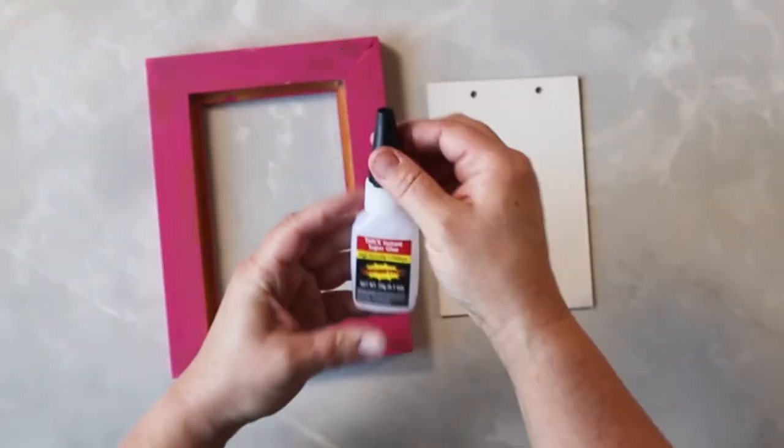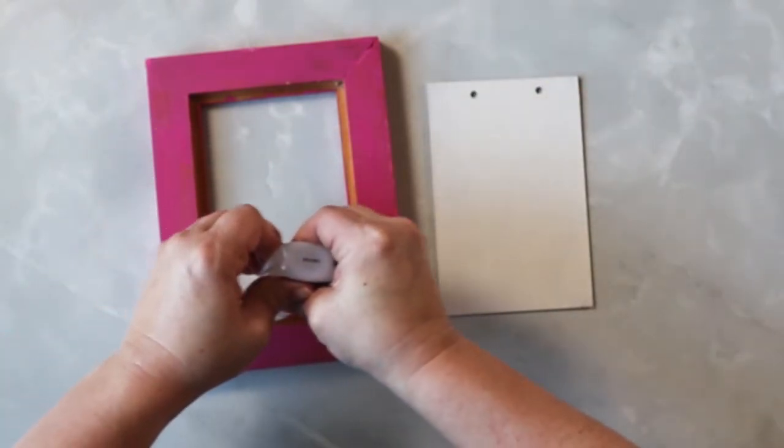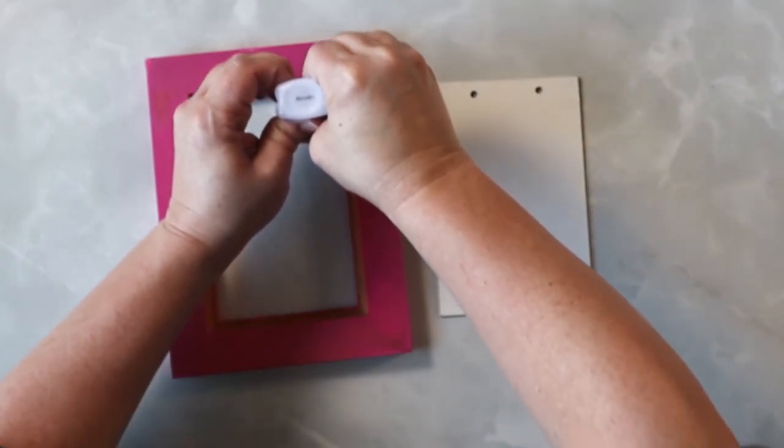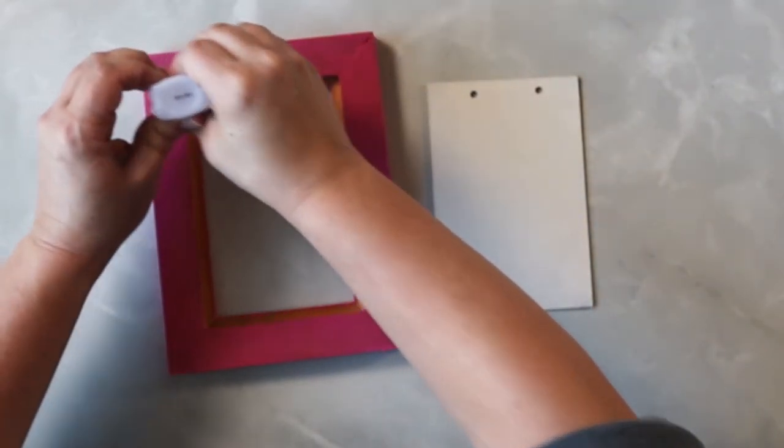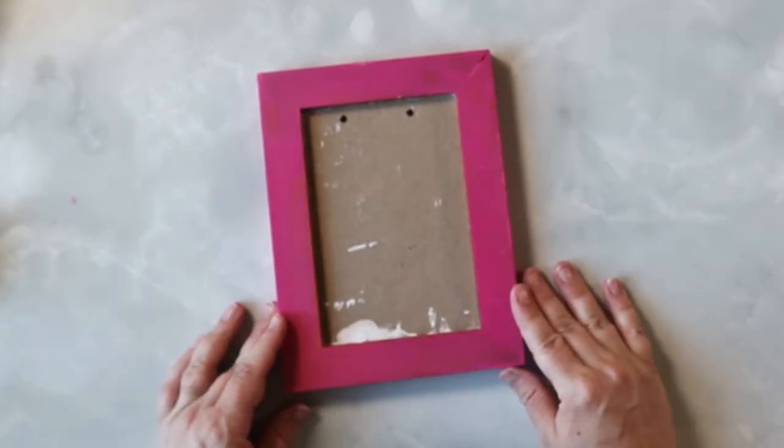Now we're gonna use the Thick Instant Super Glue. This is a really nice, thick glue, and it'll have an awesome bond. You need to be a little bit quick, because this is a super glue, so just make sure you apply your glue evenly, going all the way around. Then we're gonna place this in here and give it a couple seconds to dry.